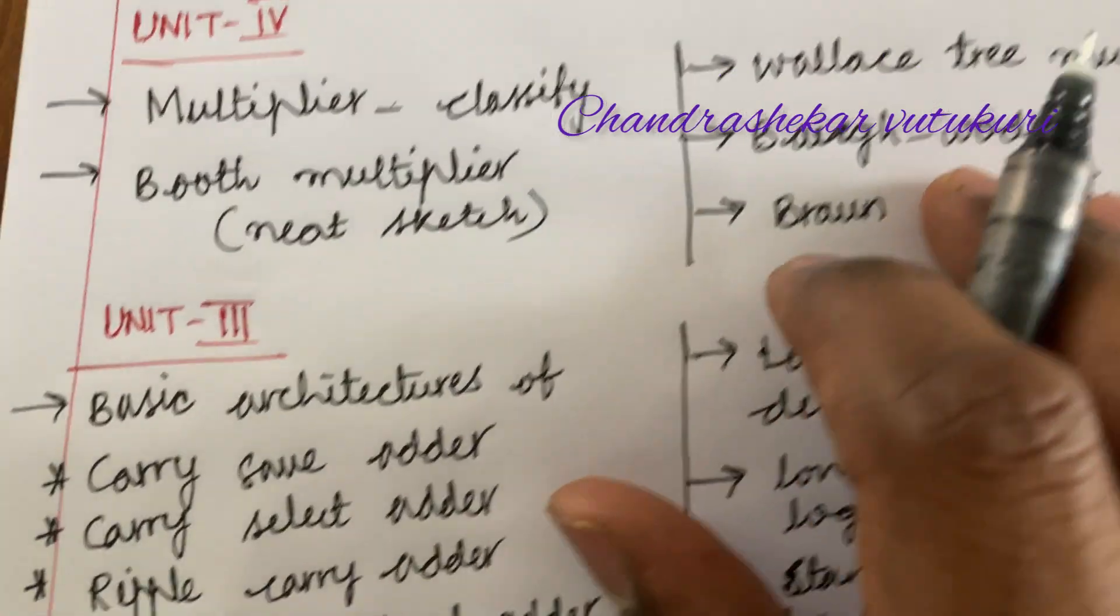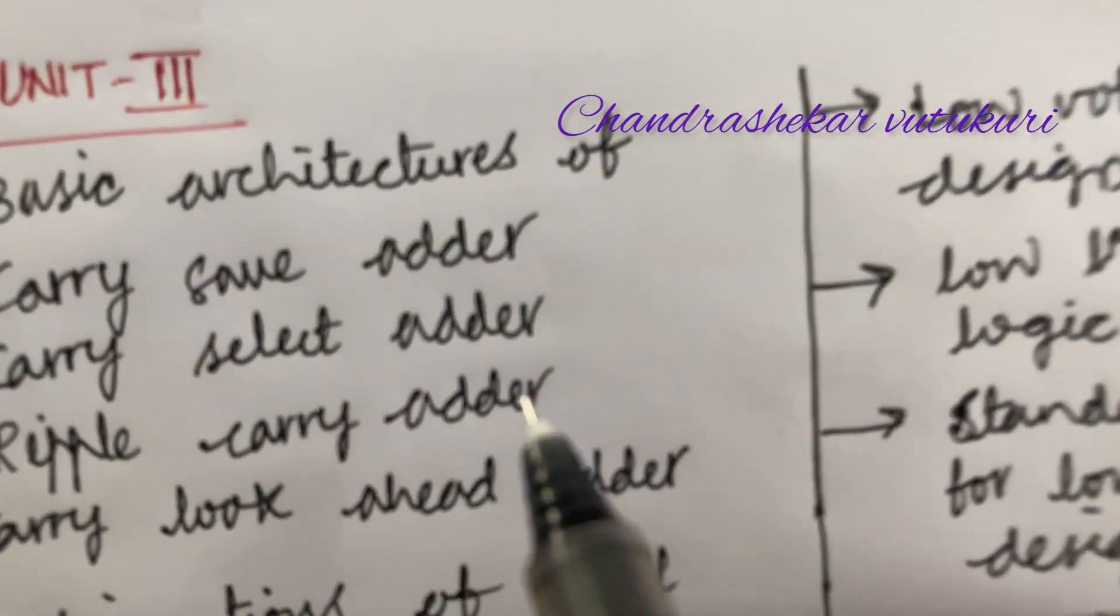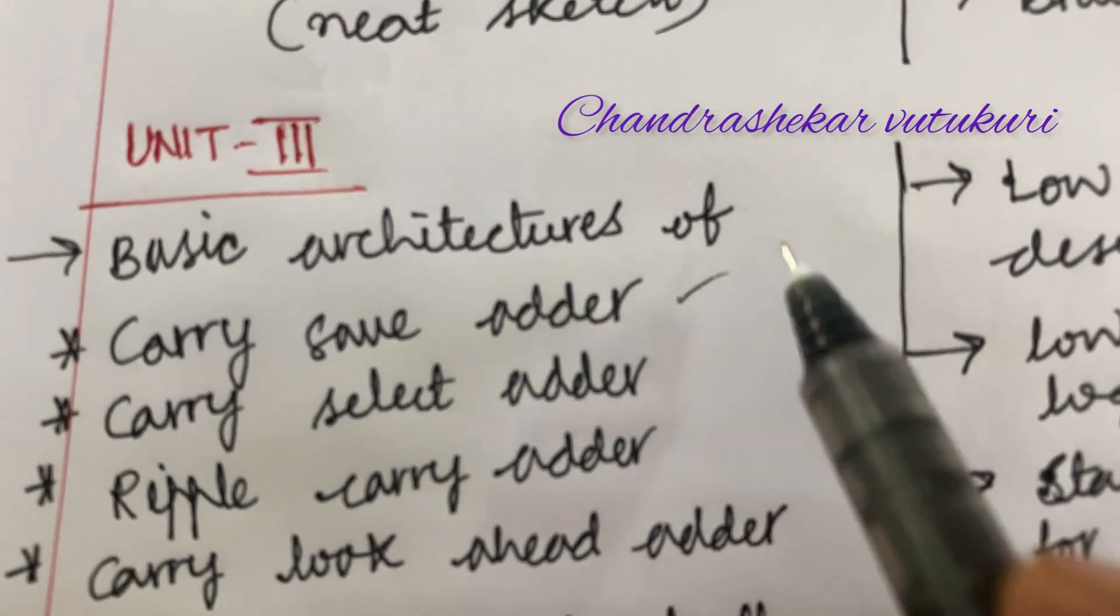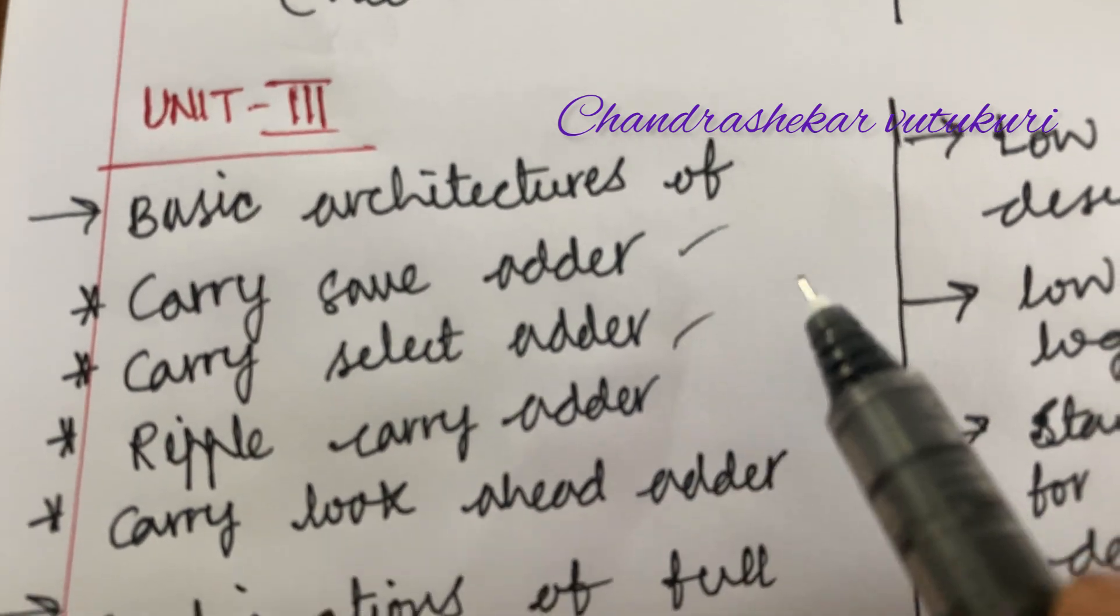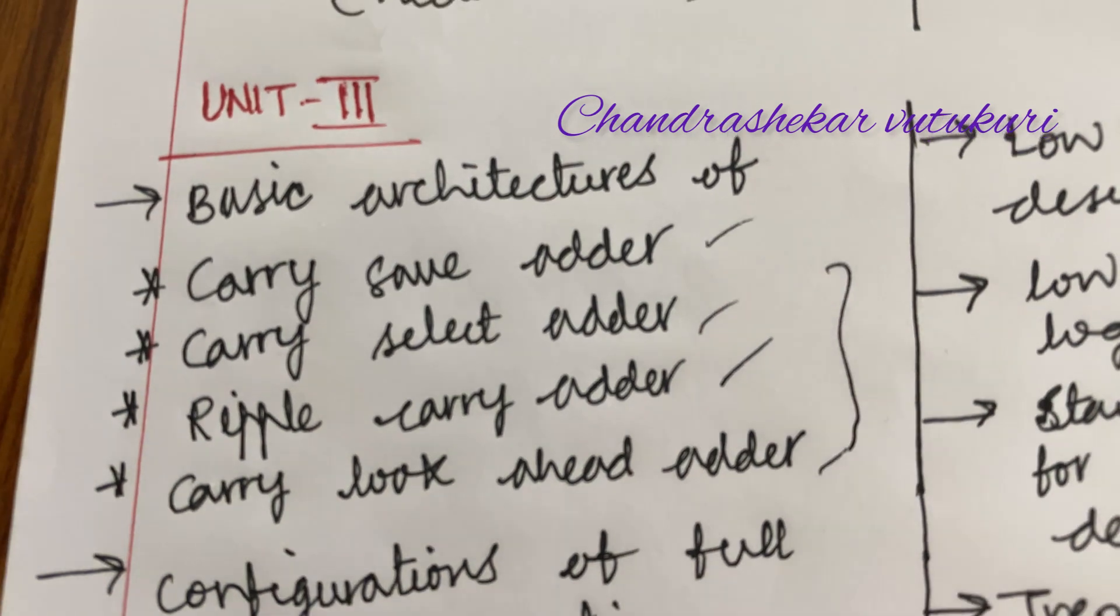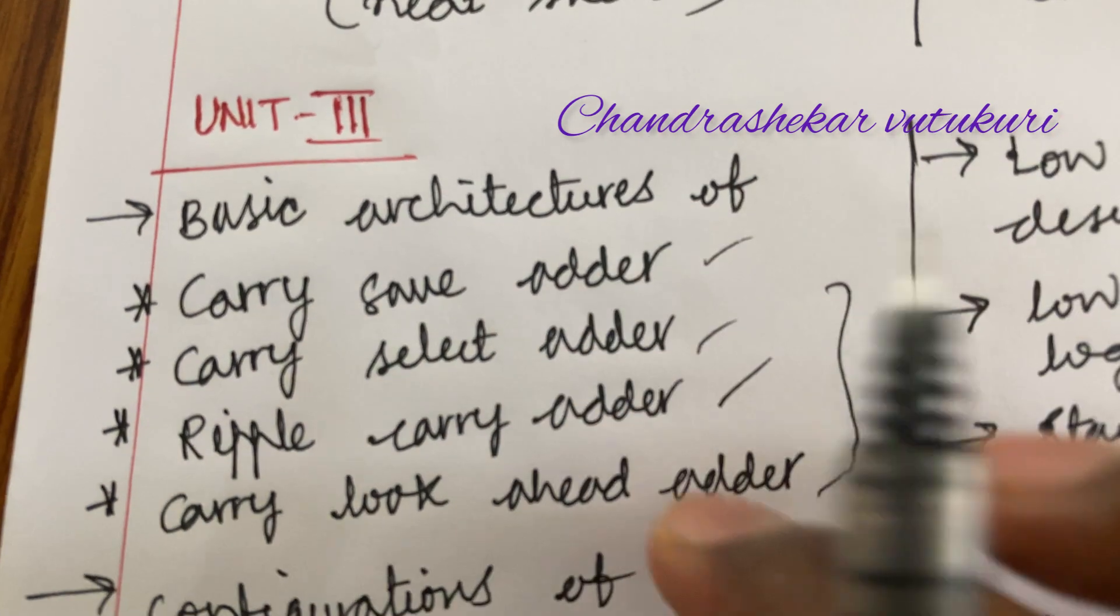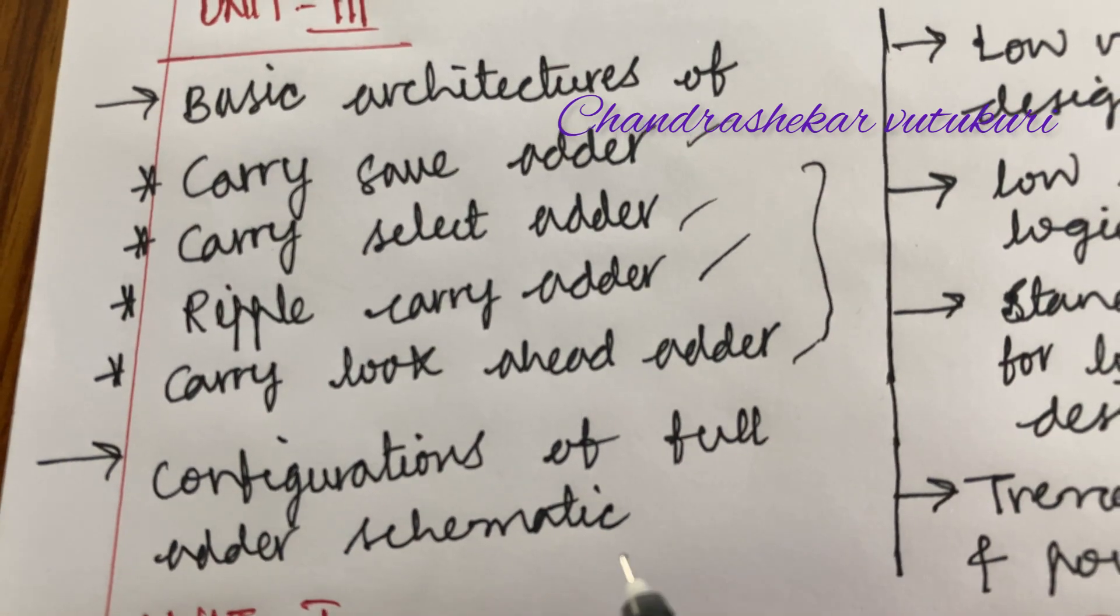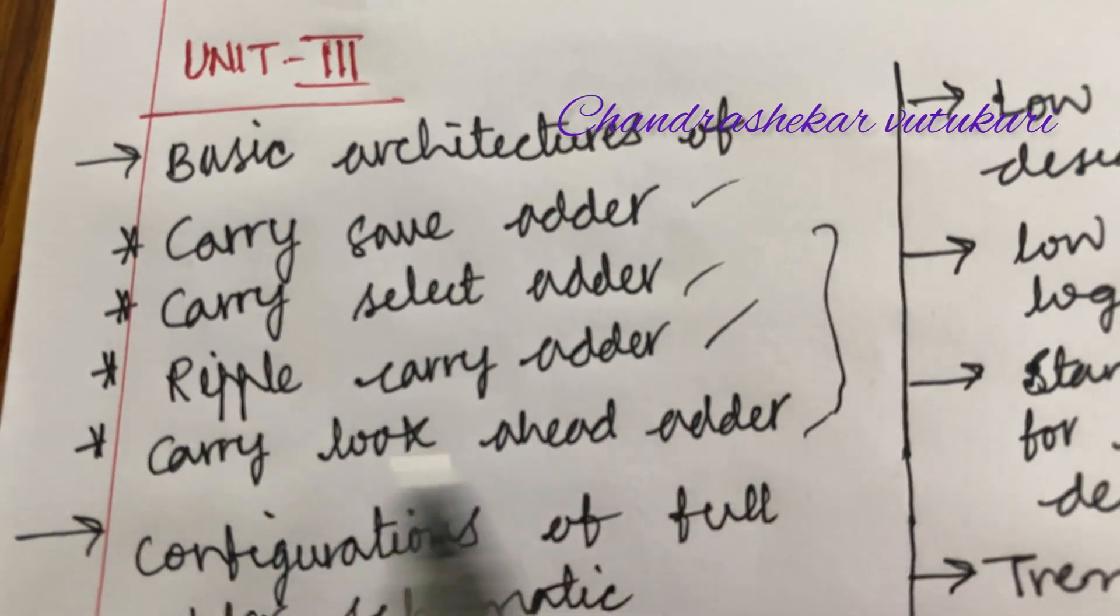Later, the unit is Unit 3 and the basic architecture of the carry save adder and the carry select adder, ripple carry adder, as well as carry lookahead adder. Any part of the equation may be for a 10 mark here or short from these architectures along with neat sketch, configuration of the full adder schematic. Along with this, you'll be getting the short questions also from this.